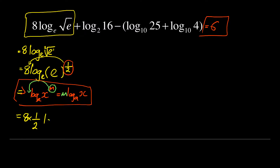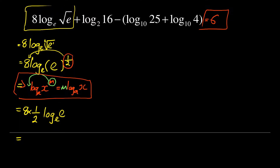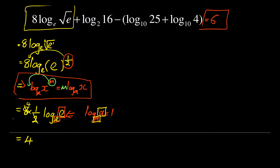We then have 8 times one-half, which is like saying half of 8 — that becomes 4. So we have 4·log base e of e. Now I apply another law: log base a of a equals 1. If the base and the number match, it becomes 1. Here e equals e, so this is 4 times 1, which equals 4.